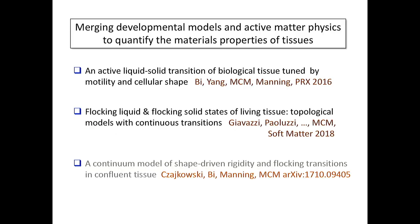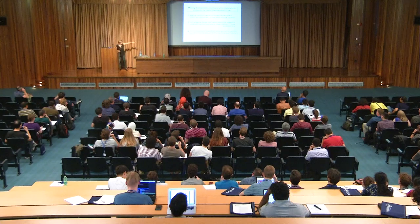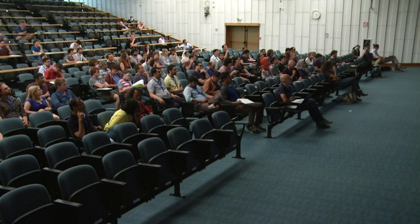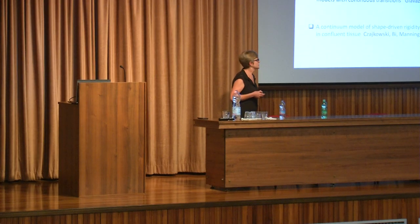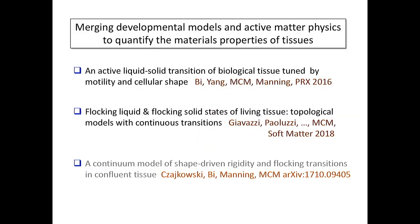We need a new type of model compared to agent-based or particle-based models used for flocking. What I want to do today is tell you about vertex models used in developmental biology, but by adding active matter dynamics—adding motility to these models—to quantify the materials properties of tissues. I will show two things: a model with a liquid-solid transition tuned by motility and cell shape rather than density, and then an alignment interaction that drives flocking and coherent motion. We have also recently developed a continuum model that couples to a cellular shape field rather than density.